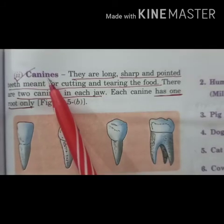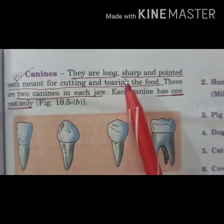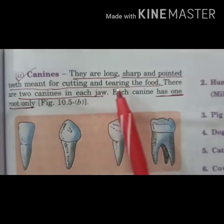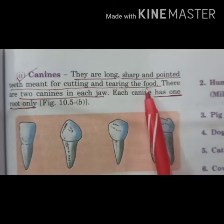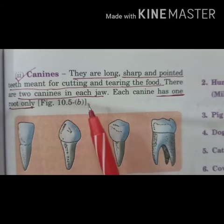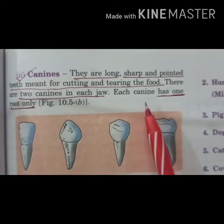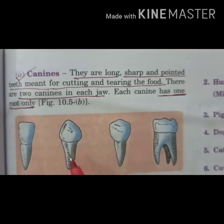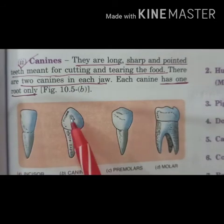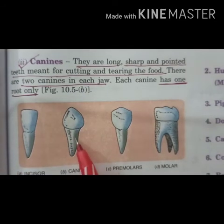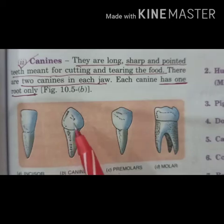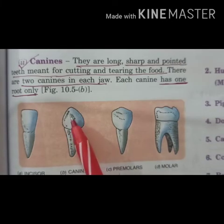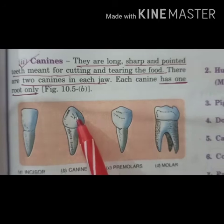Canines are long, sharp, and pointed teeth made for cutting and tearing food. There are two canines in each jaw and each canine has one root only. The part embedded in the socket is the root, and the part visible in the mouth is the crown.